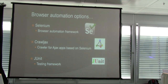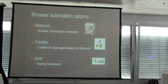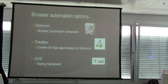On the browser automation side, I looked into some options and products. There are very good technologies that can be used. You may have heard of Selenium, CrawlJax, or JUnit. Selenium is basically the browser automation framework, which I'll cover more in depth in the next slide. CrawlJax is a very cool Java application designed to crawl Ajax web applications. And JUnit is the Java unit testing framework, which can be used with these technologies as well.